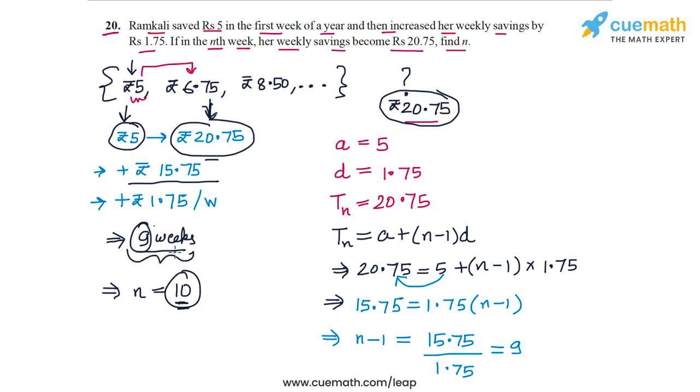So 9 weeks is the difference or the time elapsed between the savings of rupees 5 and rupees 20.75. So it takes 9 weeks for savings to go up by this much amount 15.75, but the index of the week in which the savings become 20.75 is 10, the index of that week is 10. So the answer to this question is N is equal to 10.